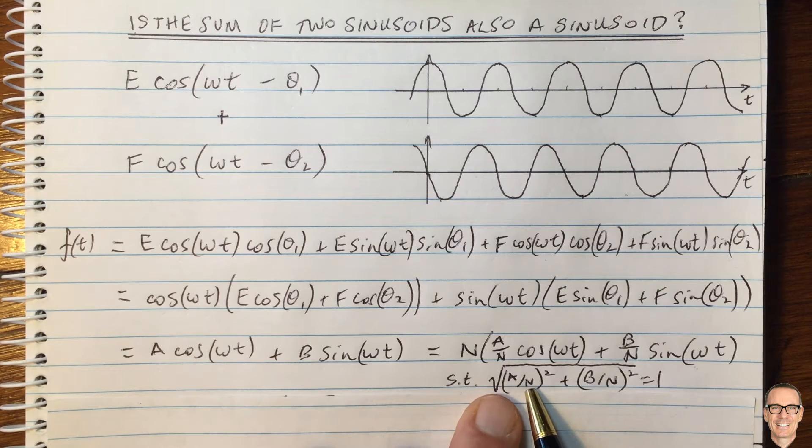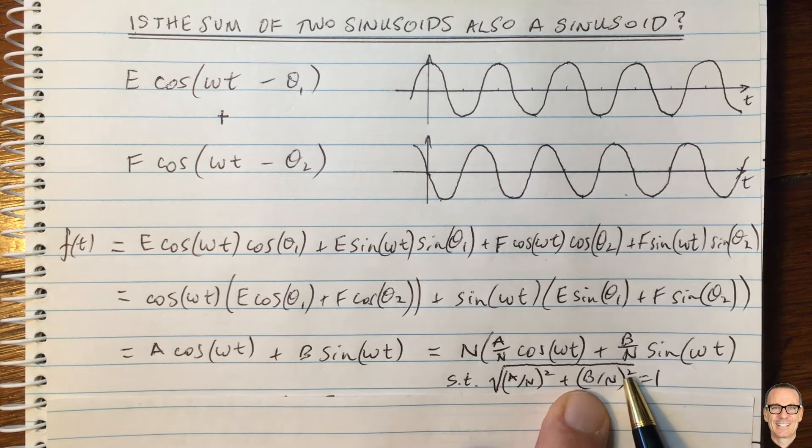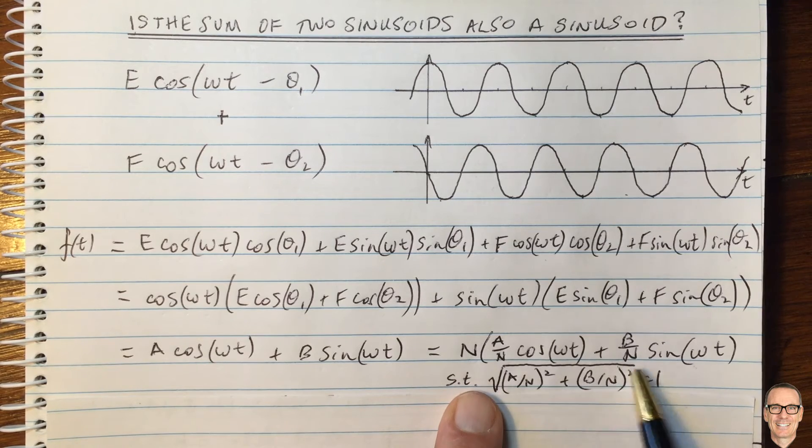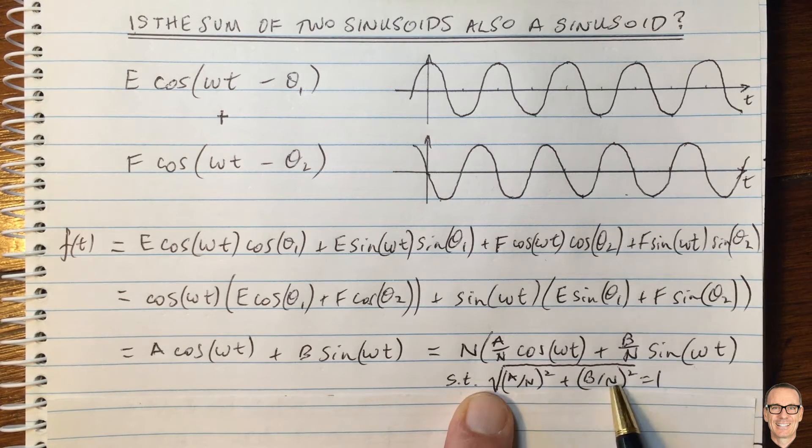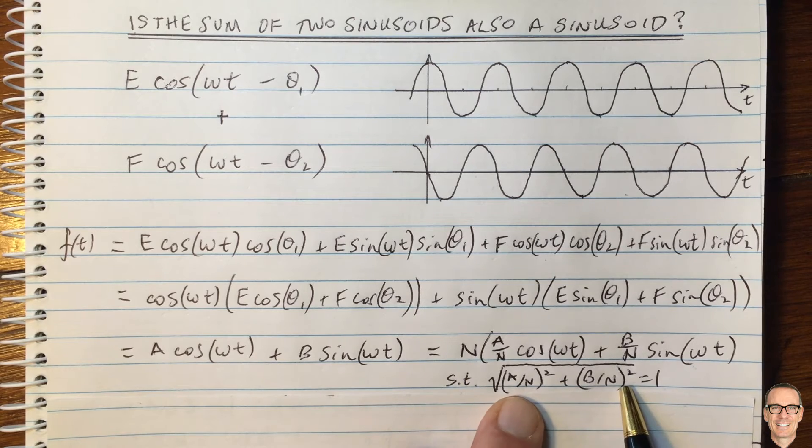So the square of A on N plus the square of B on N square rooted equals 1. So you can always do that. You can find that value of N to pull out the front.